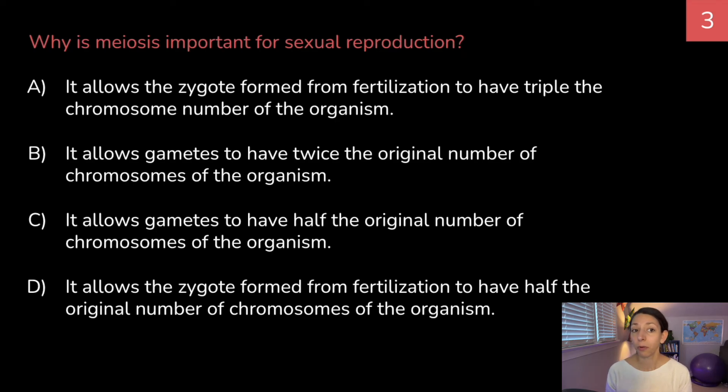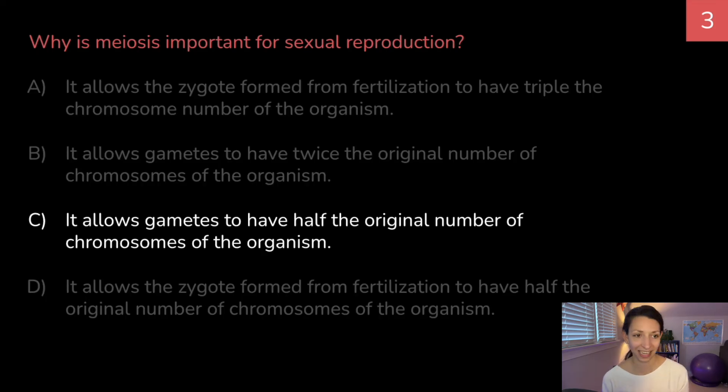Why is meiosis important for sexual reproduction? It allows the zygote formed from fertilization to have triple the chromosome number of the organism. It allows the gametes to have twice the original number of chromosomes of the organism. It allows gametes to have half the original number of chromosomes of the organism. Or it allows the zygote formed from fertilization to have half the original number of chromosomes of the organism. Think about it. C. It allows gametes to have half the original number of chromosomes of the organism. Remember, gametes are sex cells, and we need them to have half so that they can combine in fertilization to create the full diploid cells that will later undergo mitosis.